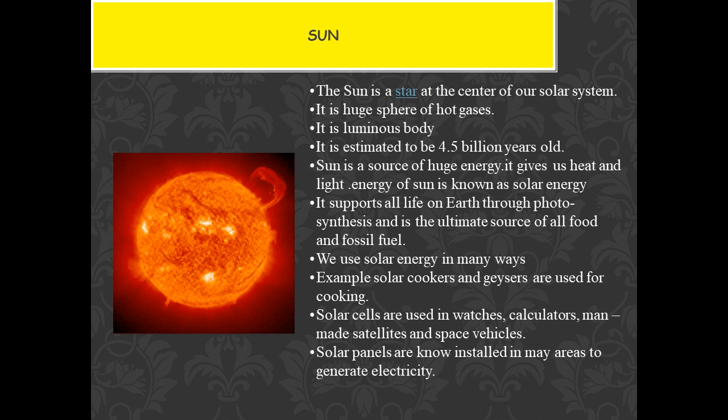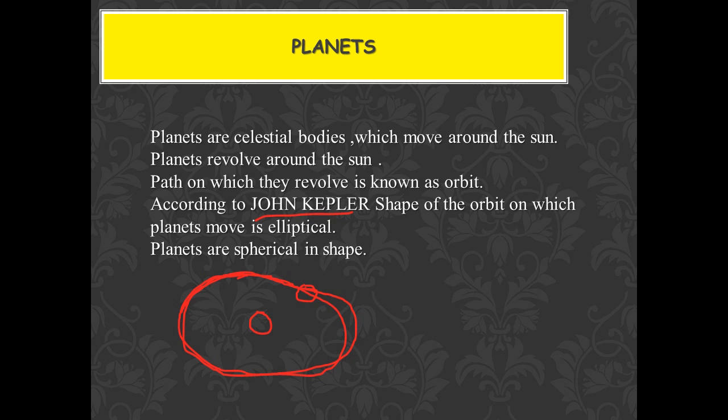Now let's talk about the other celestial bodies in the solar system. These celestial bodies which revolve around the sun are known as planets. Planets are celestial bodies which revolve around the sun, and their orbit is an elliptical orbit.